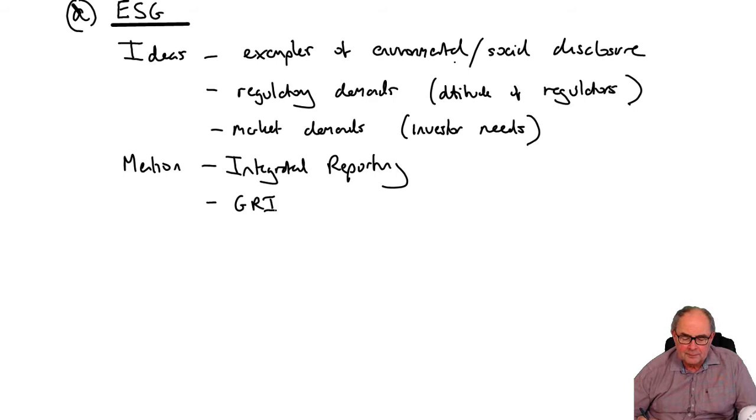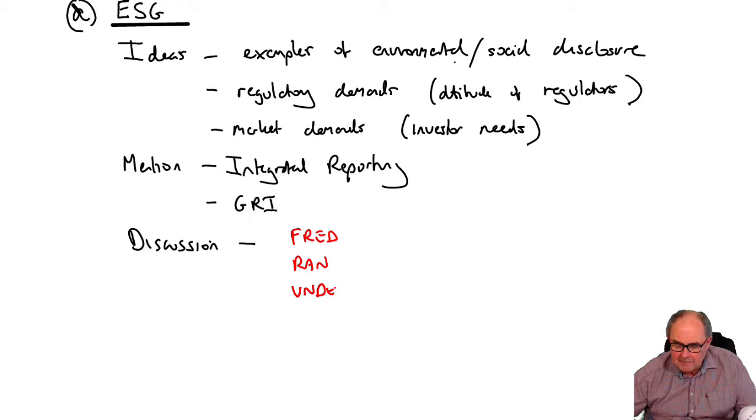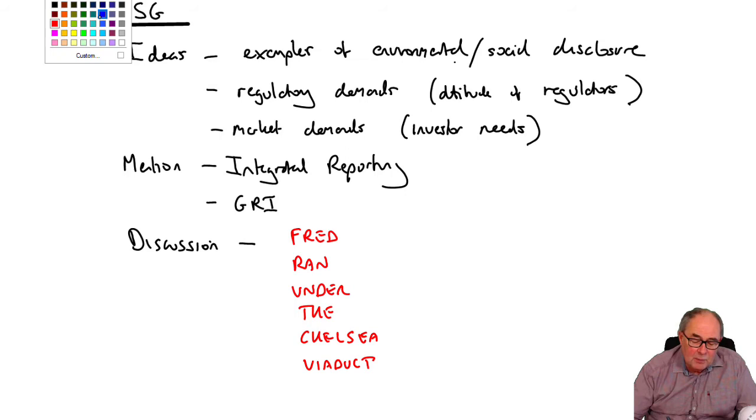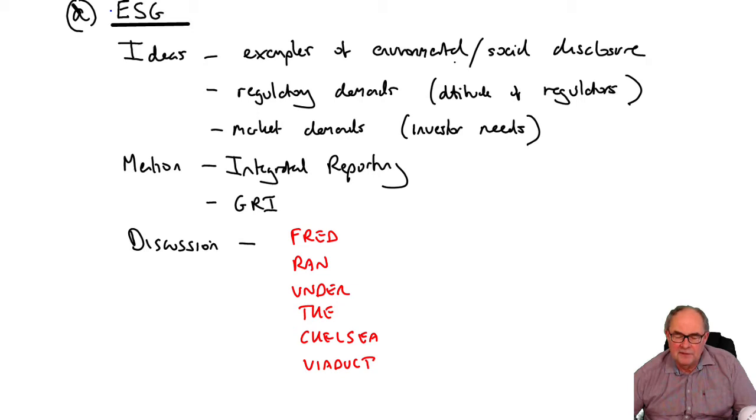If you're looking for discussion type words, to me there's nothing better than this mnemonic: Fred ran under the Chelsea viaduct. In the framework, it says that certain qualities must be presented by information. So present information of which you can give faithful representation.